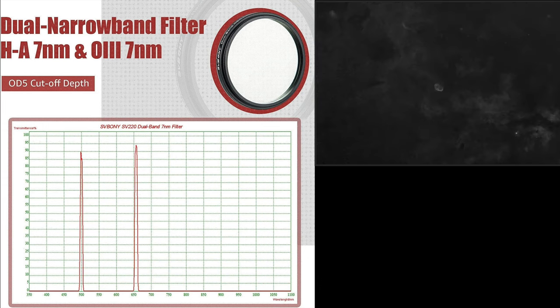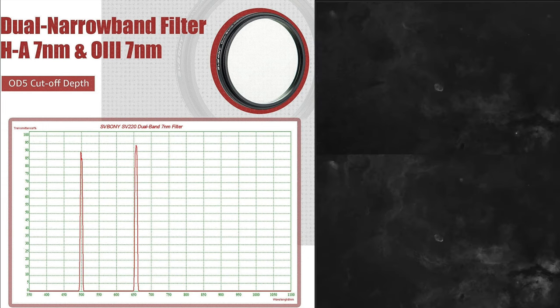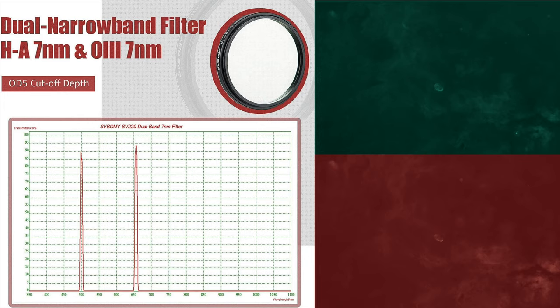This is a dual narrowband filter. For anyone that doesn't know, this is the type of filter to use with color cameras when capturing emission nebulae. It can be used under any kind of sky, but it's especially effective at blocking out light pollution of a city sky. It's so effective because it's only passing the O3 emission line and the H-alpha emission line, blocking everything else. You're maximizing the potential of your color camera because the HA signal is captured by all the red pixels and the O3 signal is captured by all the green and blue pixels.